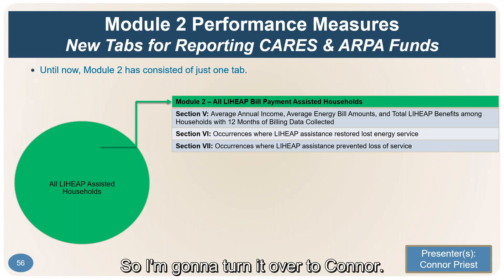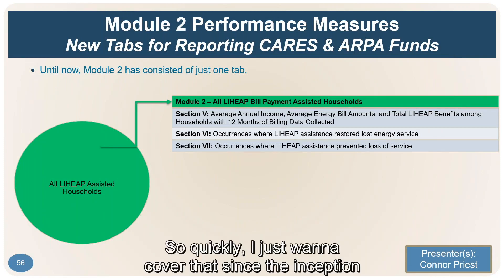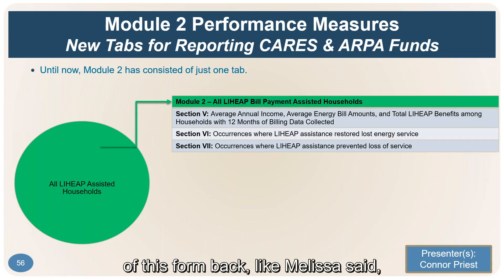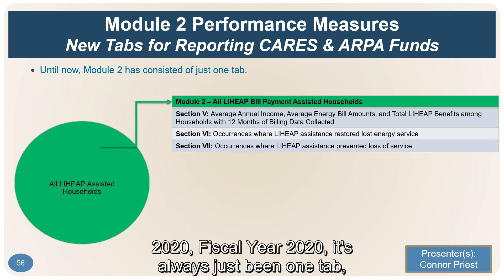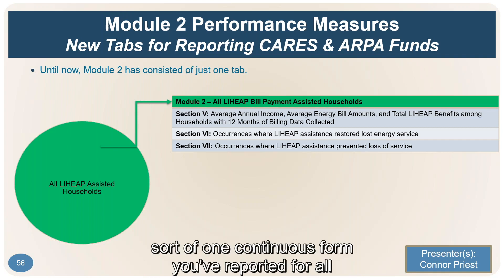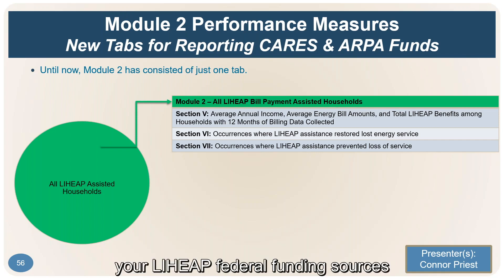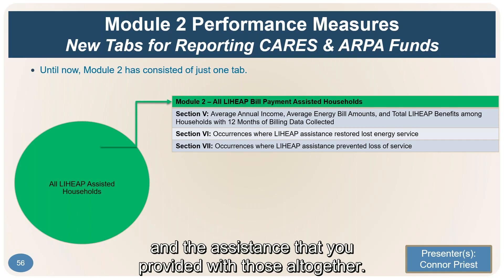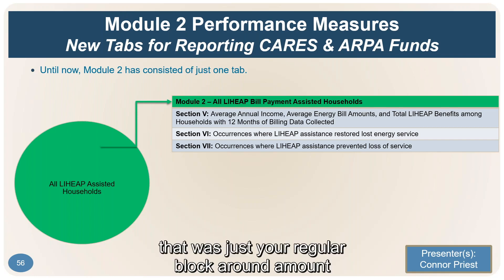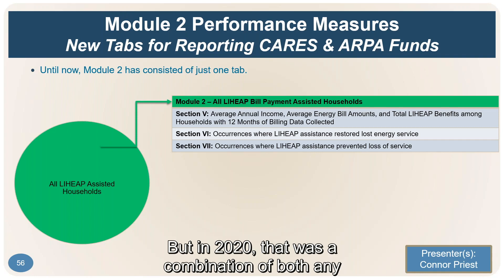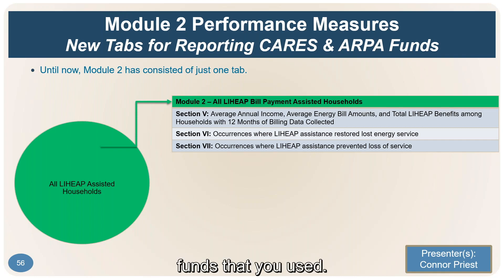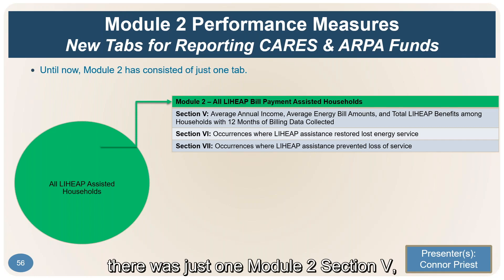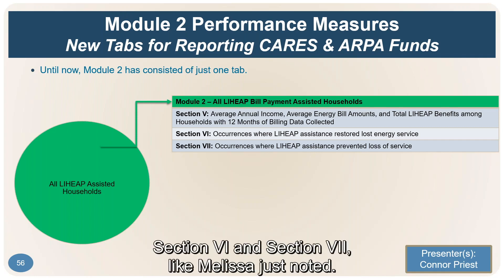Since the inception of this form in 2016 and through fiscal year 2020, it has always been one tab — one continuous form — where you reported for all your LIHEAP federal funding sources together. For most years that was just the regular block grant; in 2020 it was a combination of regular block grant and CARES Act funds. There was just one Module 2 with Section 5, Section 6, and Section 7.